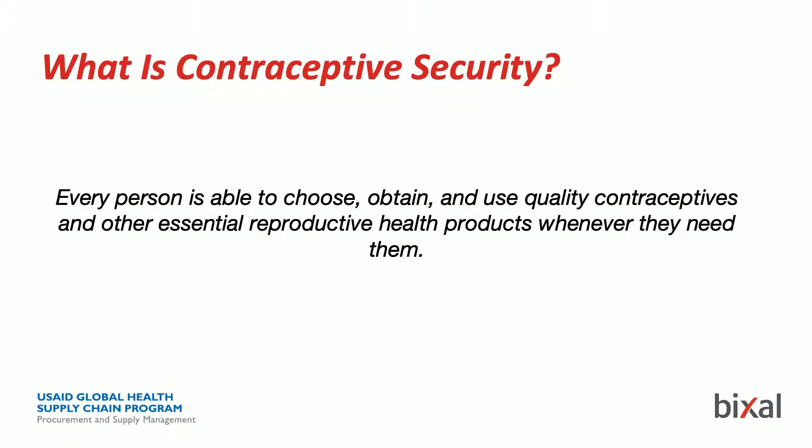Within family planning, we talk a lot about a concept called contraceptive security — and I promise we're going to get to Drupal in a second. Contraceptive security is the state where every person is able to choose, obtain, and use quality contraception and other essential reproductive health products whenever they need them. It's not just about having a single option — it's about having options and being able to effectively plan and choose what you need.